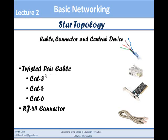The twisted pair cable used in our network comes in three types: Category 3, Category 5, and Category 6 cables. All three use the RJ45 connector. Category 3 cable supports 10 megabits per second data transfer rate. Category 5 supports 100 megabits per second. And Category 6 supports 1000 megabits per second — it is also called the gigabit cable. That covers all about star topology: cables, connectors, and the centralized device.